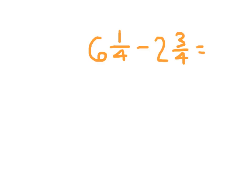So what I'm going to do is I'm going to regroup one of these wholes here, of this six here. I think you'll agree with me that you have five plus one and one-fourth for this six and one-fourth. Now this one and one-fourth, I'm going to rewrite as an improper fraction.